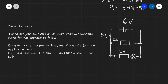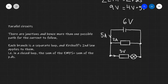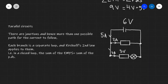Finally, let's have a look at parallel circuits. A parallel circuit has junctions and hence more than one possible path for the electricity to flow. For instance, if we have 5 amps going this way, at this junction the electricity could either go down or go to the right. So in this particular circuit, if we have 2 amps going to the right, then we should have 3 amps going down and across this branch of the circuit.